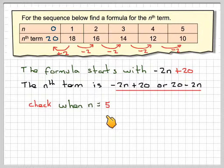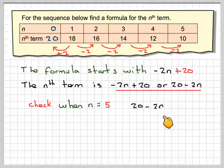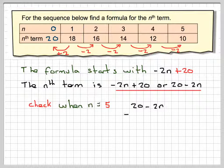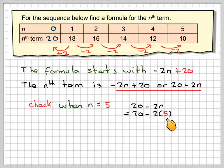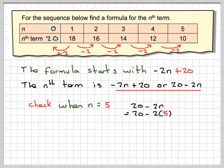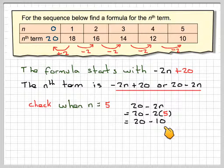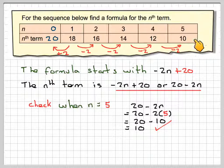So, if I check when n is equal to 5, I'll take my formula, 20 minus 2n, and then substitute in 20 minus 2 times 5, which is going to give me 20 minus 10, because 2 times 5 is 10. And 20 minus 10 gives me 10, which is what I wanted.